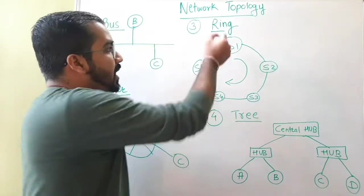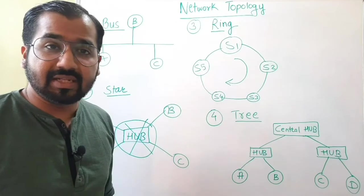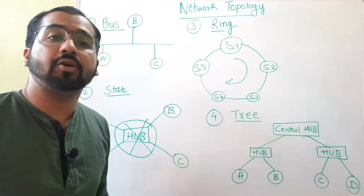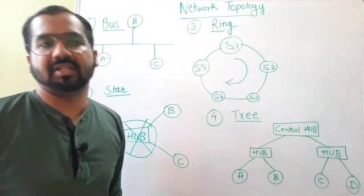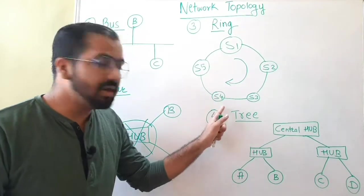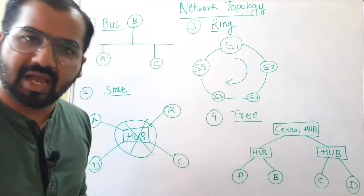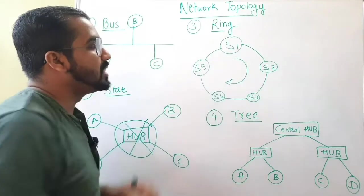So for transmission of message, the station, let's say in this example, S1 has to have a token. It has to hold it and then it has to transmit the message. And it will be received by the station S4. So this is all a simple thing.